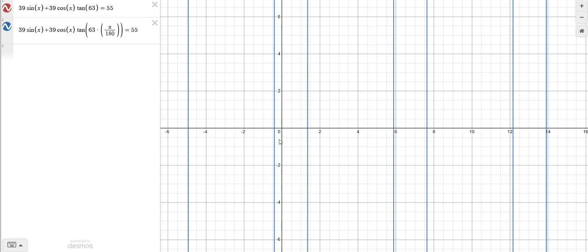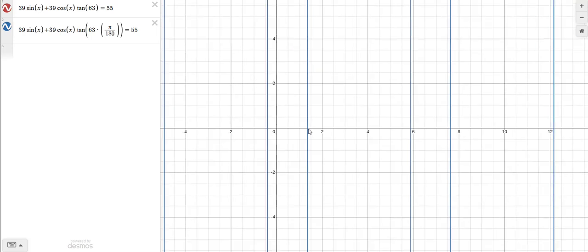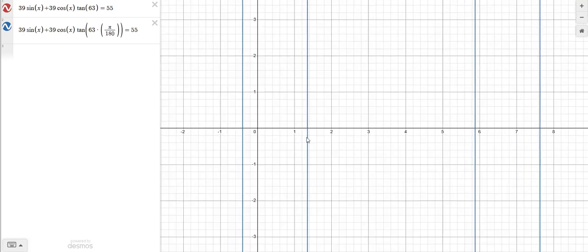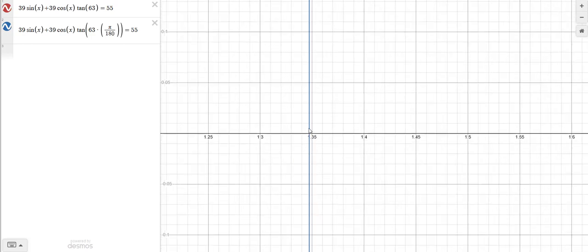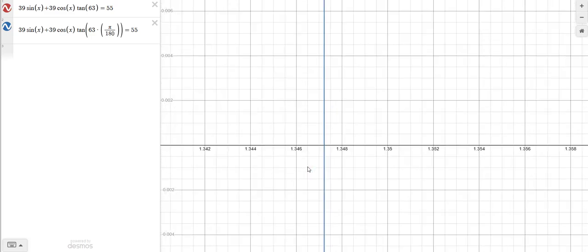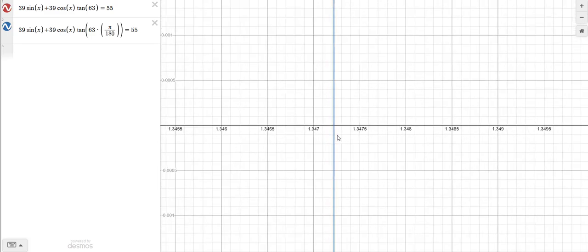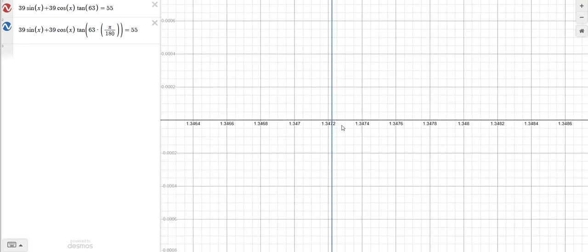And basically, we're looking for what value of x makes this equal 55. And so we're looking for when we hit the x-axis, really. And we hit it a few, quite a few times, but basically we want the smallest positive number, which is right here. And so, some calculators let you click on it to find the zeros. This one, it's not letting me, so I'm just going to zoom in as much as I can, because I need to get a few decimal places. And the answer wants me to just round to two decimal places. But for converting purposes, because this is in radians right now, I'm going to take more decimals than I need. So 1.3472 is the answer in radians, but I need to go ahead and put it back in degrees.